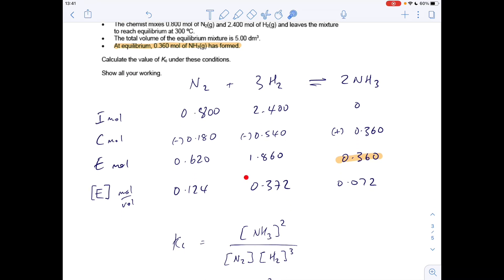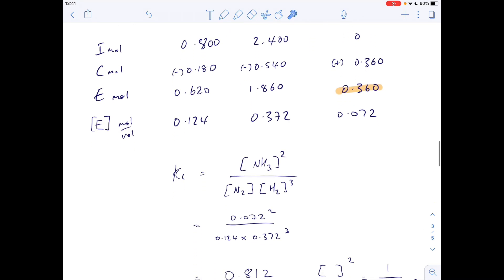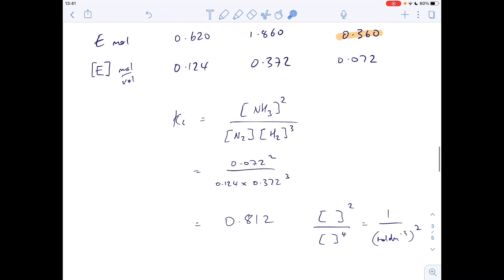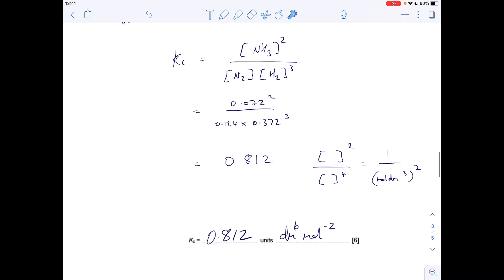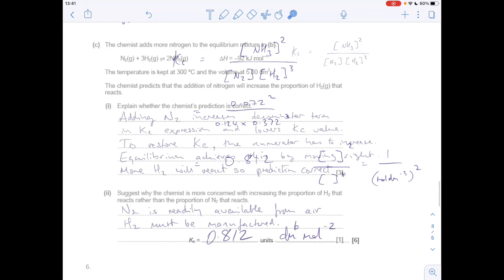Then write your Kc expression - remember it's square brackets for Kc calculations. Put your numbers in and there's your answer. For units, you've got concentration squared on top and concentration to the power of 4 on the bottom - because it's power of 1 times power of 3. That leaves you 1 over mol dm⁻³ squared. Take everything to the top: dm⁶ mol⁻².